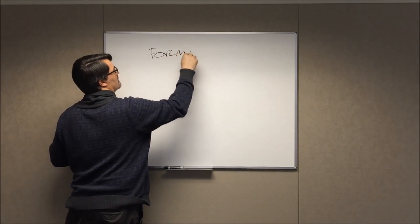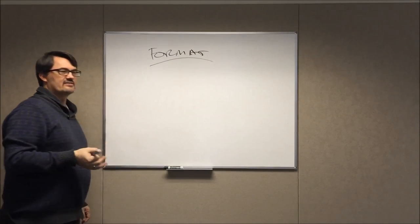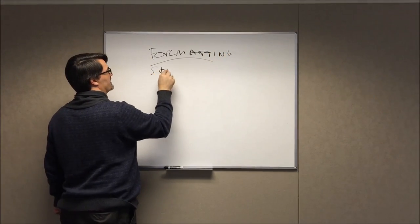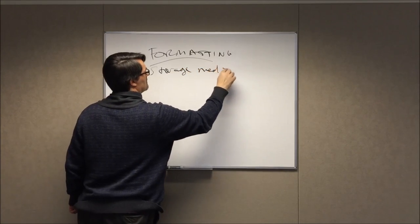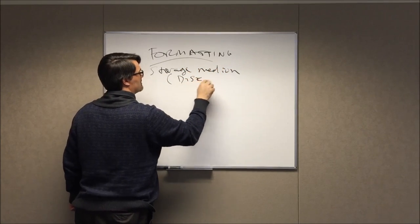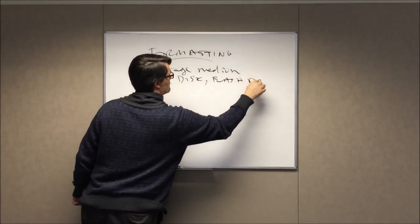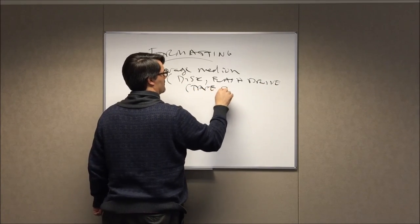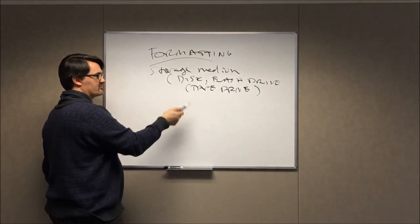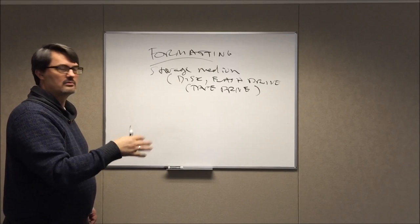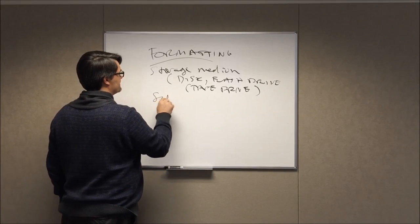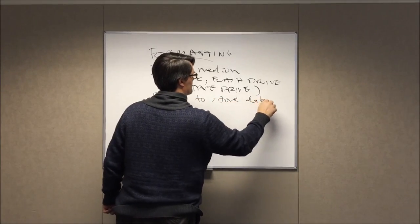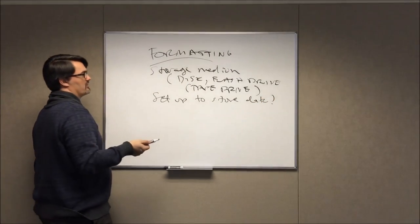Now let's look at formatting. The format of something is its specific arrangement. Formatting relates to taking a storage medium — a disk, a flash drive, or back in the day a tape drive — and setting it up to store data. Let's take the example of a disk.